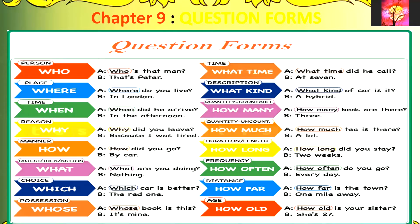'How did you go?' — 'By car.' When you need to show an object, an idea, or an action, then the question word you will use should be 'what.' For example: 'What are you doing?' — 'Nothing.' When you need to show a sense of choice, then the question word you will use is 'which.' For example: 'Which car is better?' — 'The red one.' When the answer needs to show a sense of possession, then the question word used will be 'whose.' For example: 'Whose book is this?' — 'It's mine.'